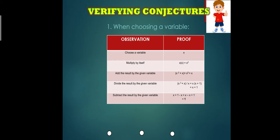After that, you will divide X to the result. So the answer will be X plus 1. Then subtract the result by the given variable. So X plus 1 minus X. Your answer will be 1.